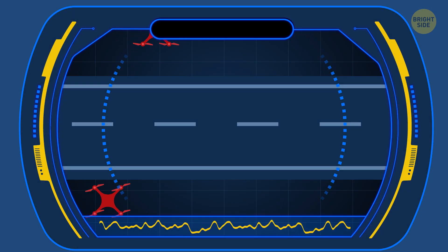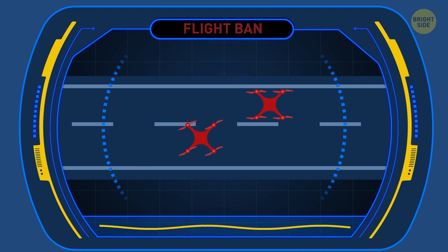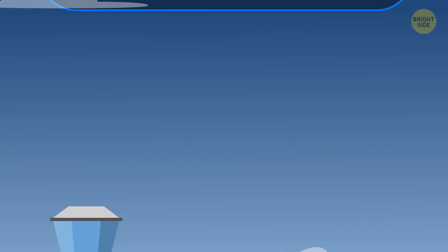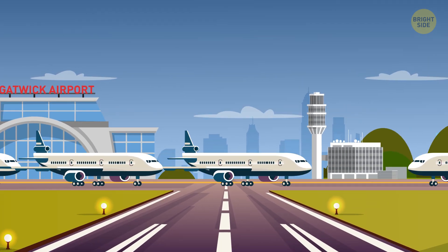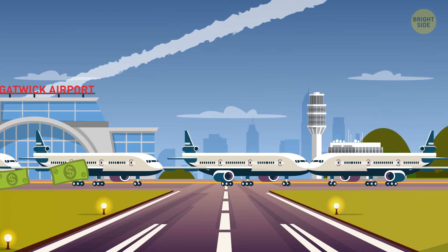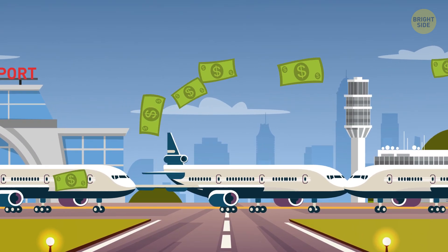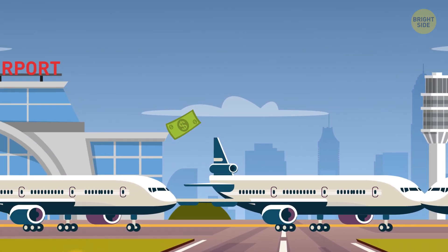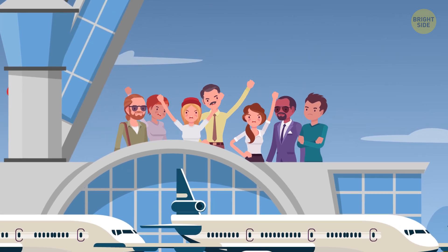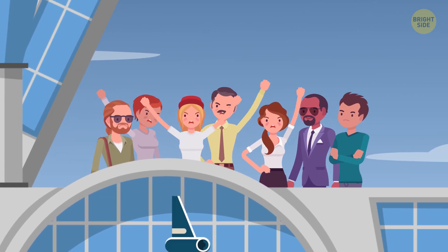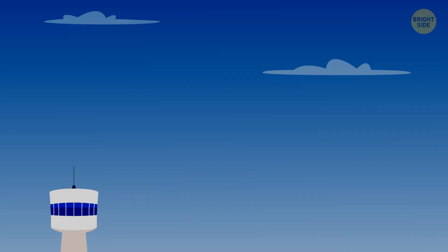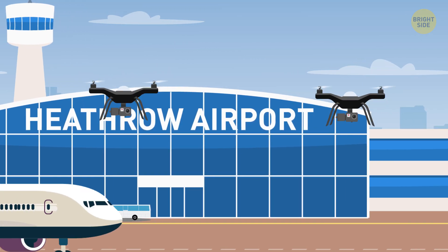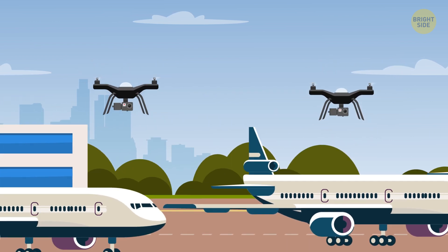This accident took place in December 2018 in London. Two illegal drones appeared on the runway of Gatwick Airport in the morning, and hundreds of flights had to be canceled, delayed, or even grounded to avoid the risk of collision. That time, airlines lost tens of thousands of dollars, and 2,000 passengers, stranded at the airport, were offered to rebook their flights or get refunds. Several weeks later, drones were noticed at Heathrow Airport, and some flights were grounded again.